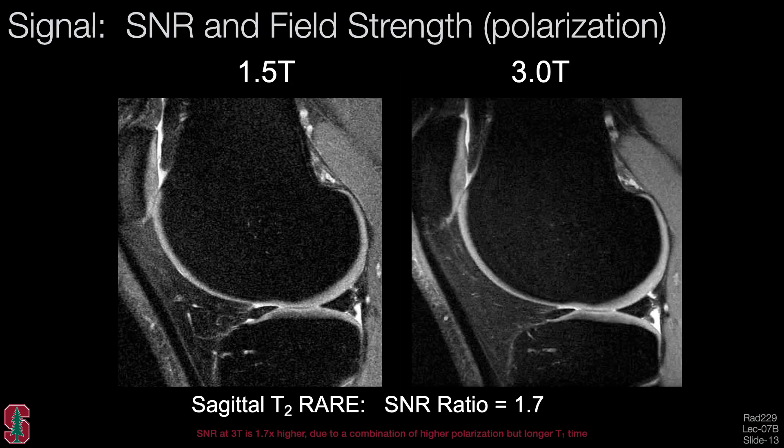Looking at field strength: as shown in the last lecture, SNR is proportional to the Larmor frequency. Here are two images acquired at 1.5 T and 3 T. The SNR at 3 T is almost twice that at 1.5 T, though not quite, because there is a longer T1 time at 3 T which causes some saturation effects in the sequences. Higher field strength generally means higher polarization and higher signal.